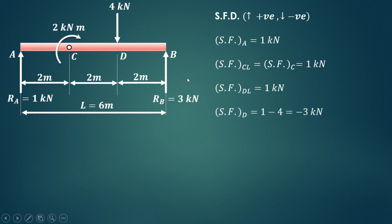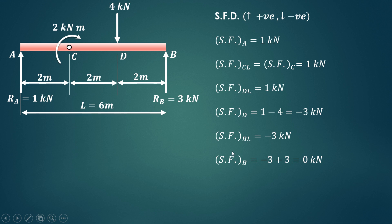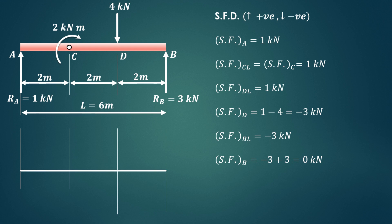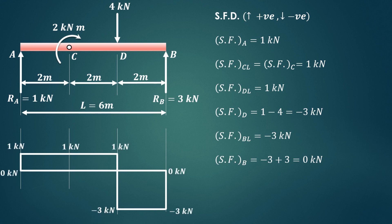Exactly at D, the downward 4 kN point load is applied, giving 1 minus 4 equals minus 3 kN. This remains minus 3 kN up to just left of B. At B, adding the upward reaction of 3 kN gives minus 3 plus 3 equals 0. Drawing the diagram: 1 kN from A to D, dropping to minus 3 kN at D, remaining to left of B, and returning to 0 at B.